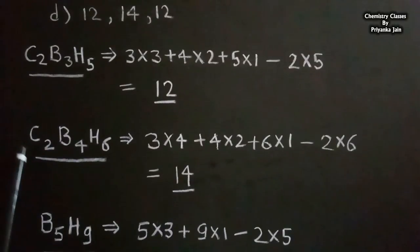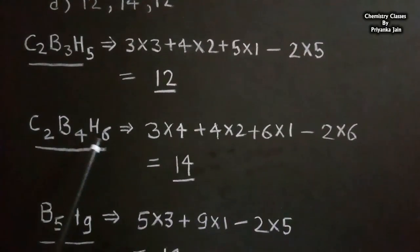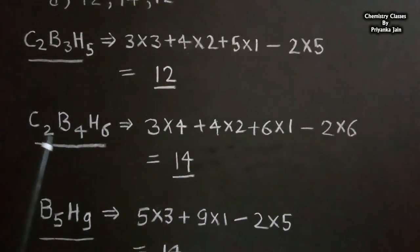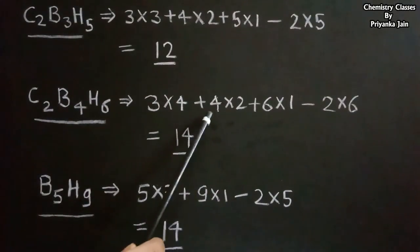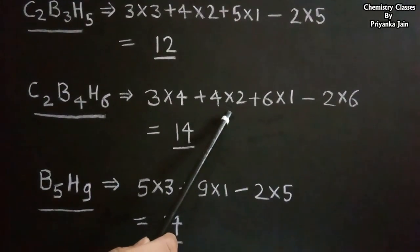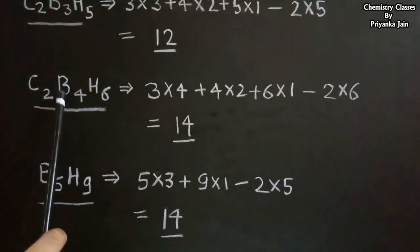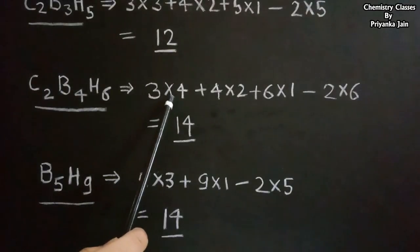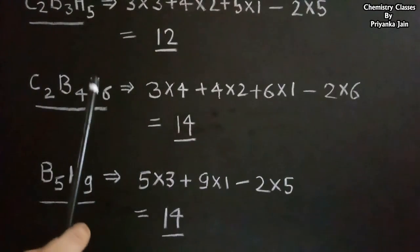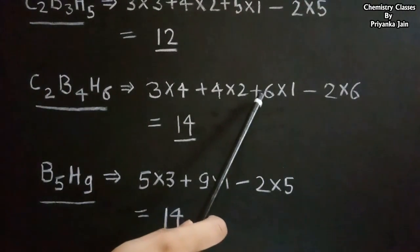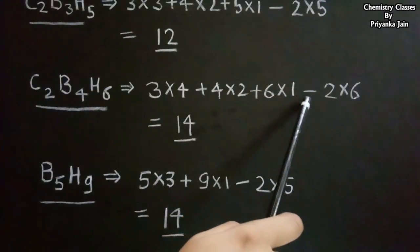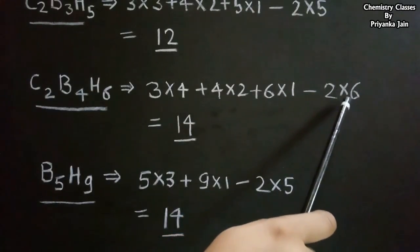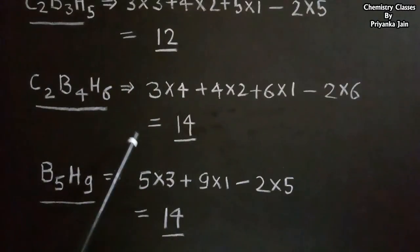For C2B4H6: 2 carbon atoms give 4×2 electrons, 4 boron atoms give 3×4 electrons, 6 hydrogen atoms give 6×1 electrons, minus 2×6 (since n = 6). Total skeletal electrons = 8 + 12 + 6 − 12 = 14.